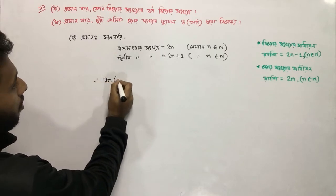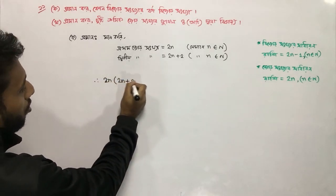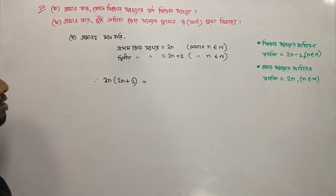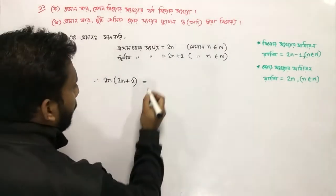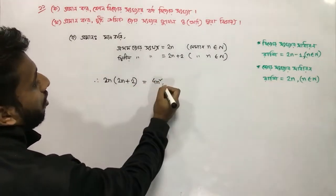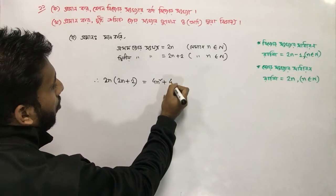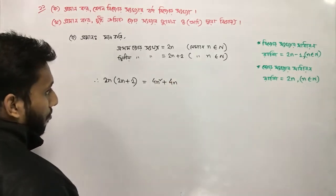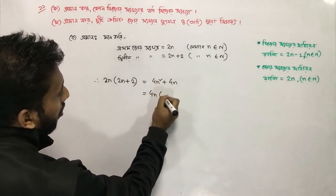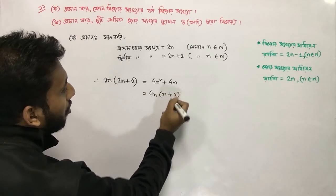2n into 2n plus 2 is equal to 4n squared plus 4n. 4n is equal to 4n plus 1.